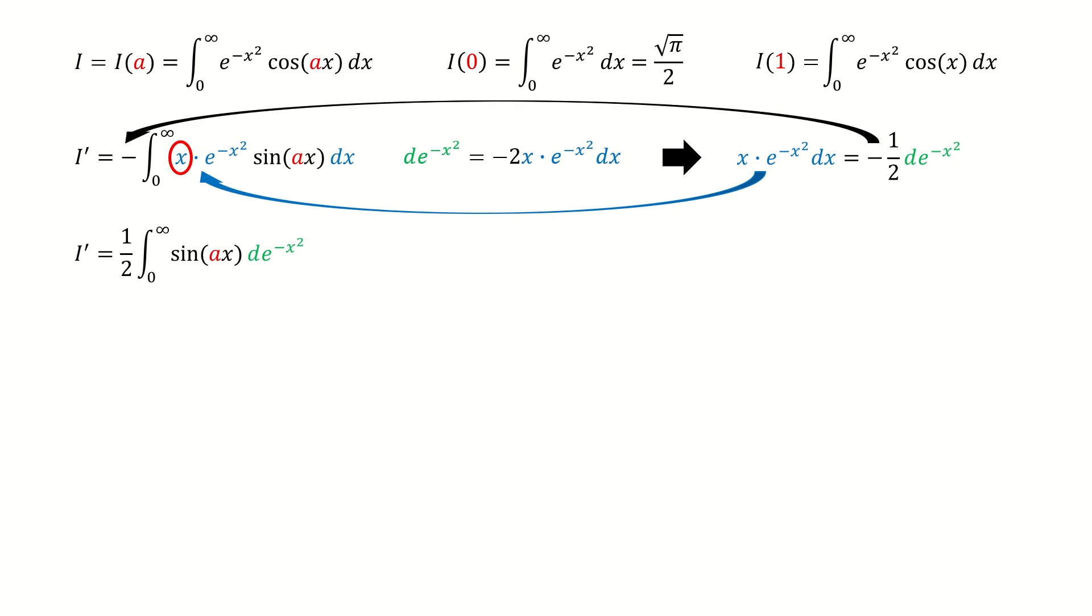And note for these two negative signs here. After plug in, they cancel out. And then we do the integration by parts. So the first term vanishes. And next, we do the derivative on this term.